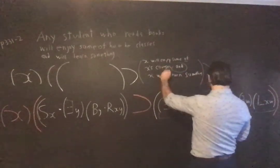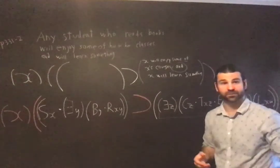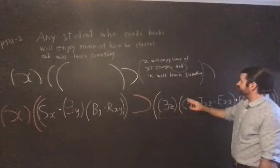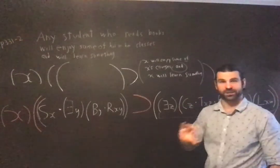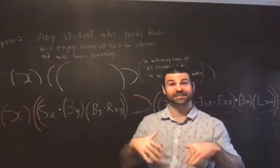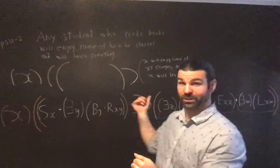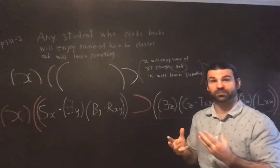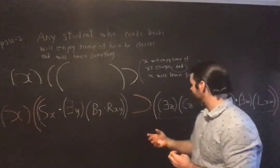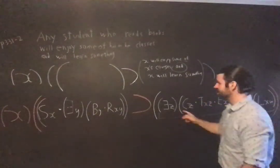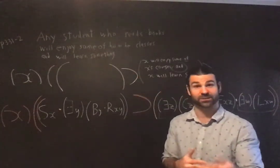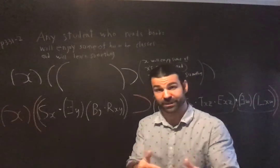Second conjunct, everything to the right of the and, so this is, so first, X will enjoy some of X's courses. So sum of X's courses, so the student has courses, the student is taking courses, and also enjoying them. So they have to be courses, as it were, of the student, the student is taking those courses, so the student is standing in the taking relation to some things of which we know that they're courses.